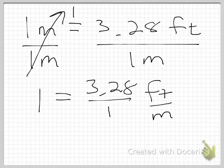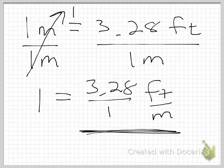Let me go back to that slide. Clearly, if the value of this quantity is just one, if I invert that, in other words, if I write one meter over 3.28 feet, well, the inversion of one is still one.